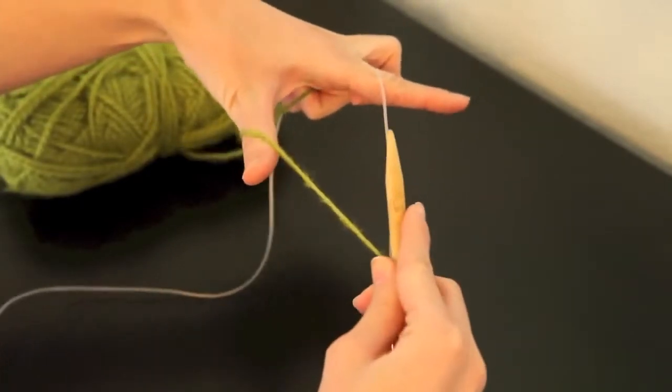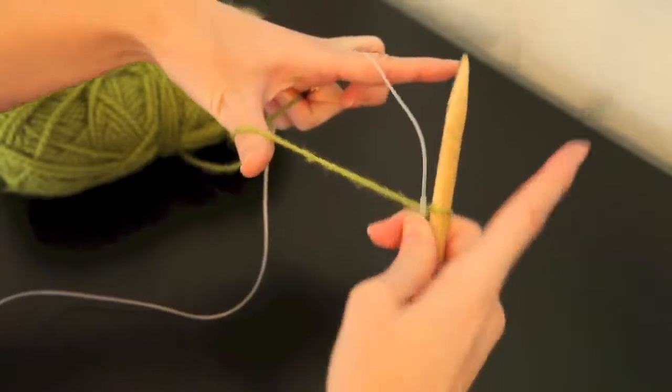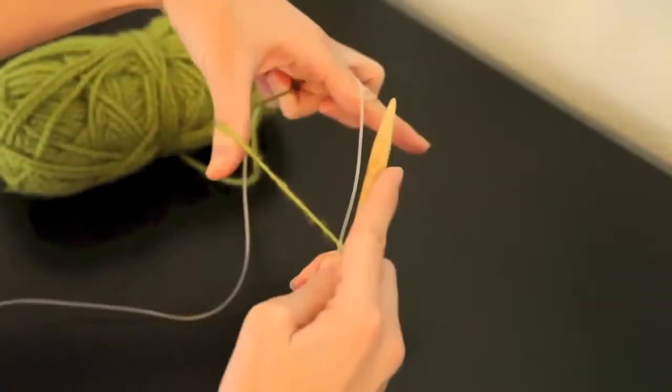Now make sure that you note that the slipknot that we put on doesn't actually count as your first stitch. So this is going to be a two-part process where we're going to be adding stitches by casting on.